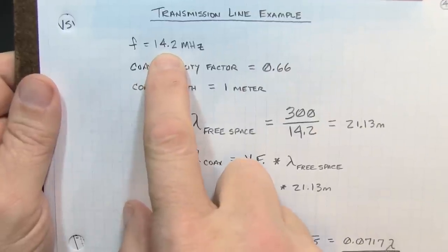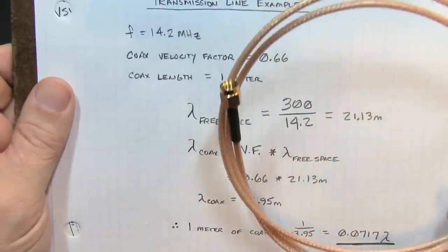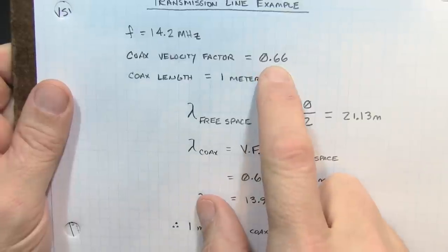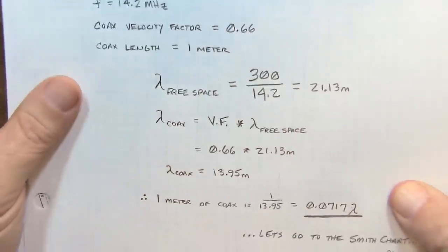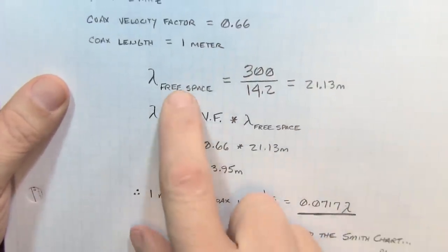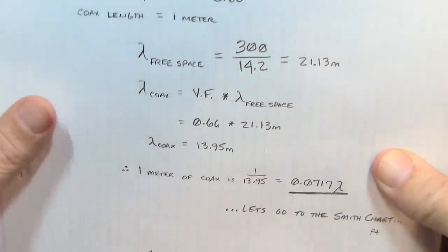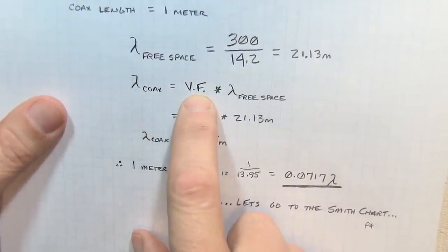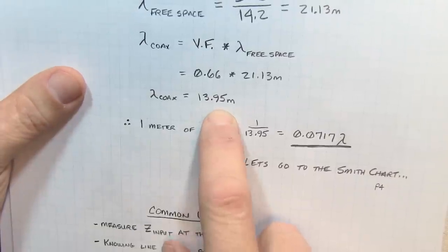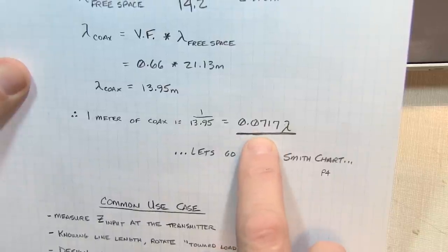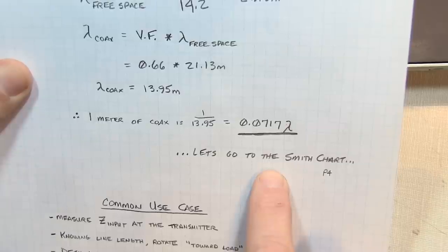Here's our example. We'll use our test frequency of 14.2 MHz, right in the 20-meter phone band. I've got coax with a velocity factor of 0.66, meaning the wave speed is 66% of the speed of light, with length of 1 meter. In free space, the wavelength is 300 divided by 14.2, giving 21.13 meters. To determine coax length, multiply by velocity factor, so 1 wavelength of coax is 13.95 meters. With only 1 meter, inverting that gives 0.0717 wavelengths long.